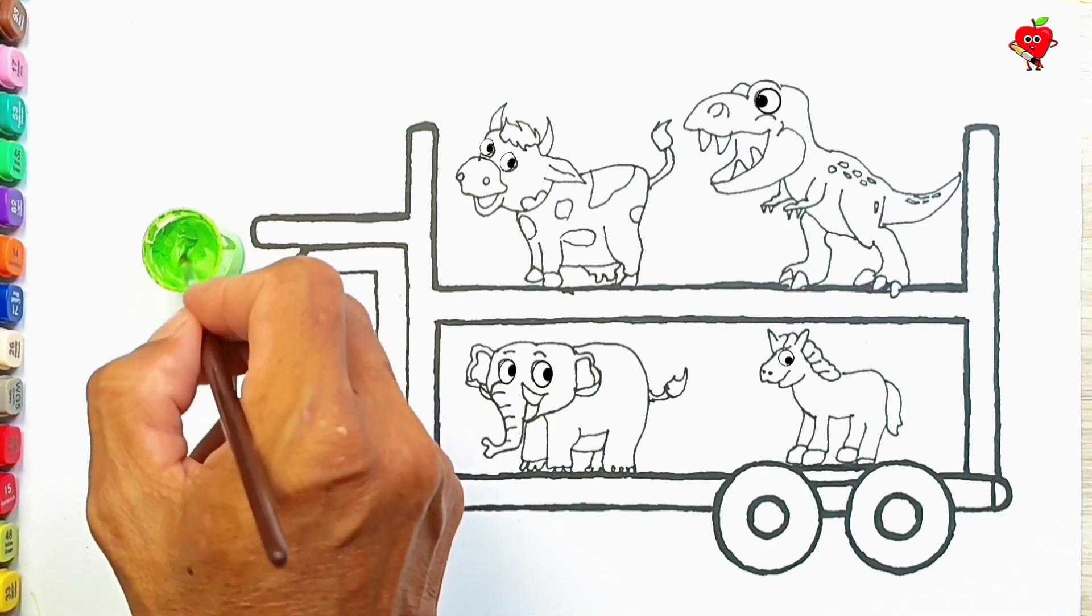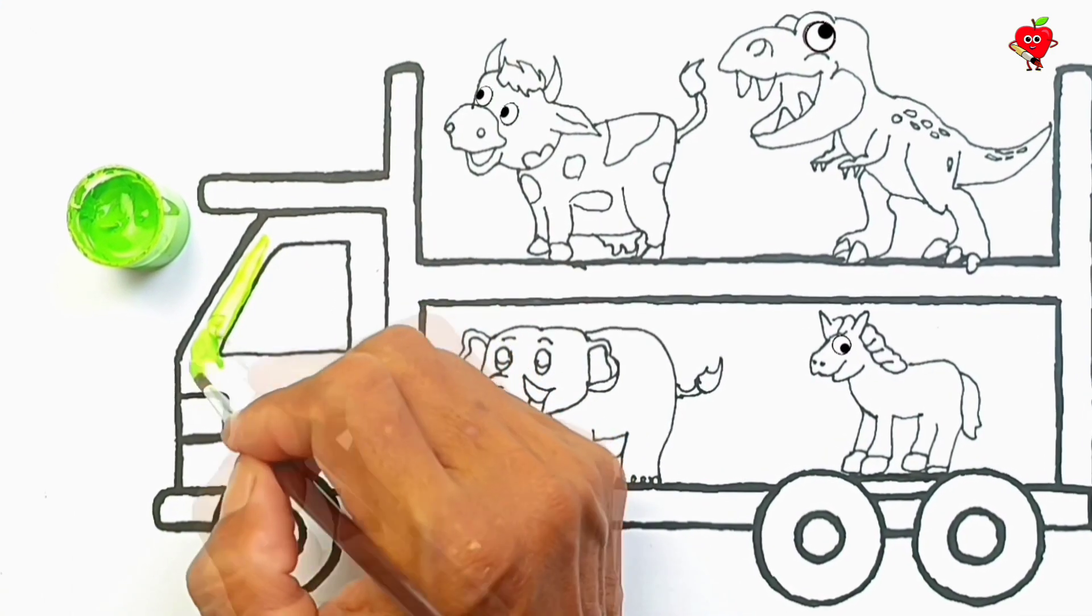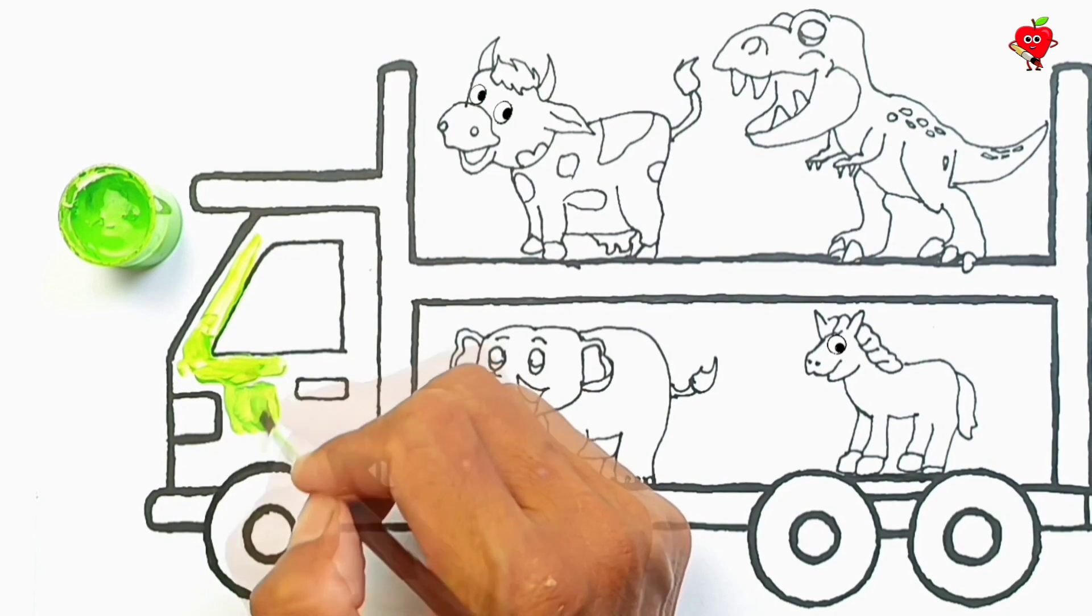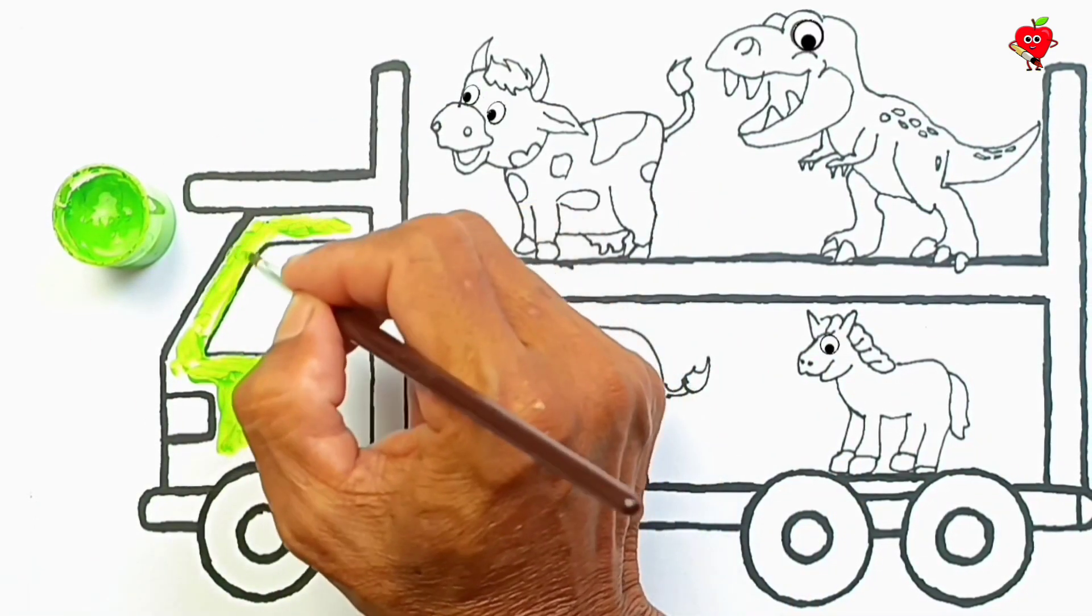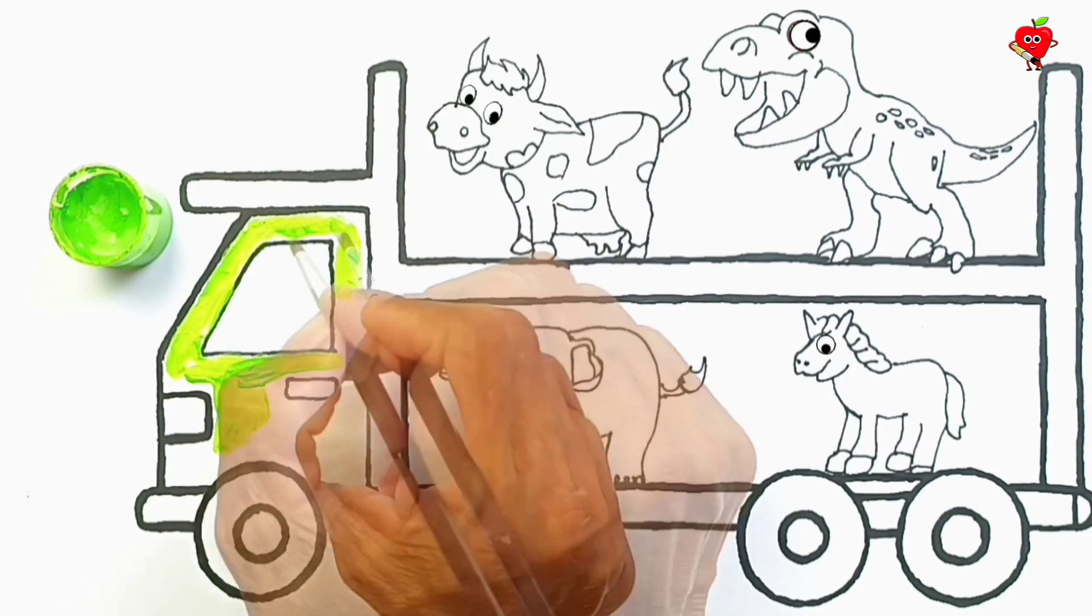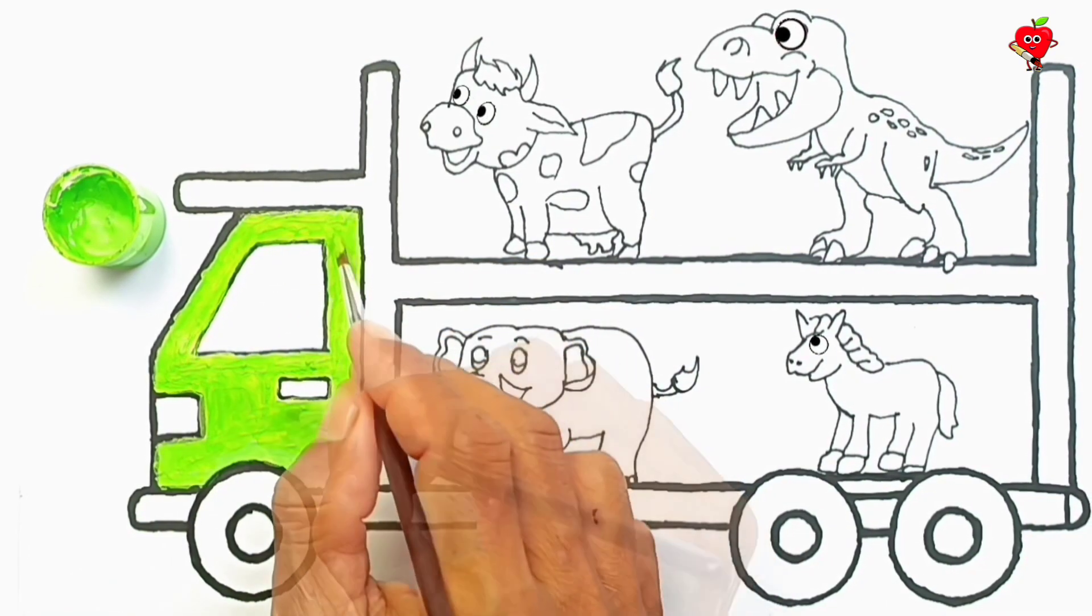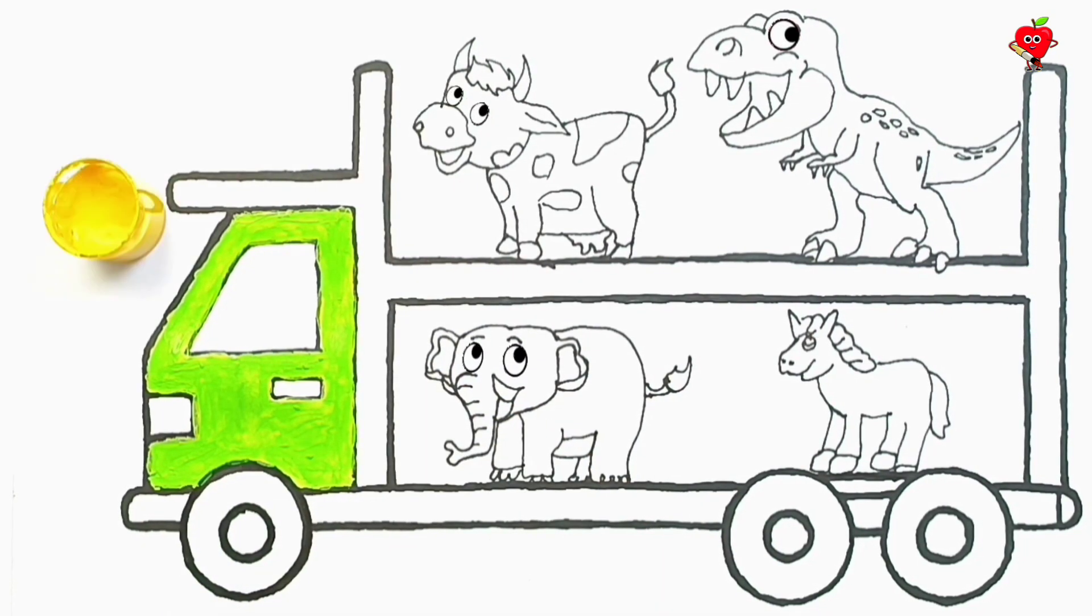Yellow, green. First, let's color the car cabin. Let's use a brush or any painting tool you have.